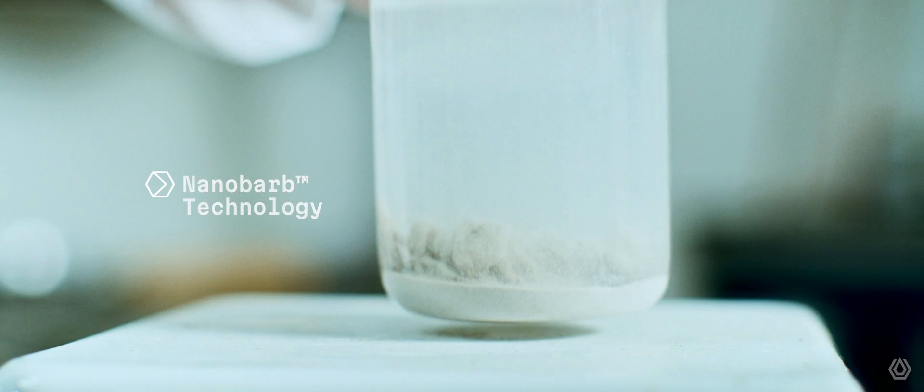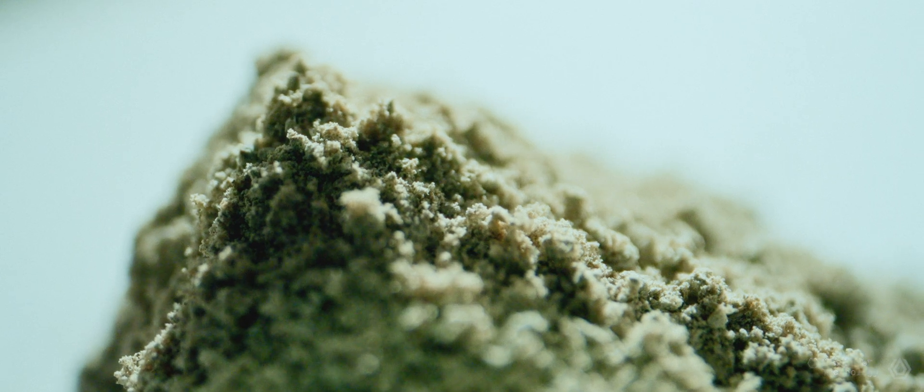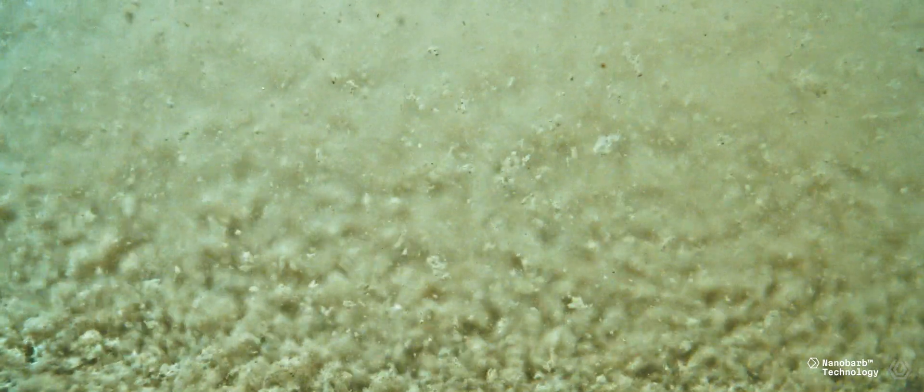Before Invicta, founders Steve and Jason created the patented nanobarb, nanoscopic boron nitride tubes with crystal barbs grown along their surface like rock candy. These barbs create massive surface area, locking onto PFAS so it can be removed.